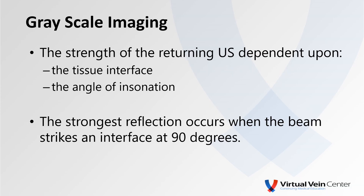We direct the ultrasound into the tissues, and some of this ultrasound energy is reflected back to the transducer, some passes through and strikes deeper structures. The strength of that returning ultrasound wave is dependent upon the tissue interface and the angle of incidence. The strongest reflection occurs when the beam strikes an interface at 90 degrees. The strength of this reflection is displayed as a shade of gray, and as different tissues reflect ultrasound differently, we can differentiate one tissue from another.